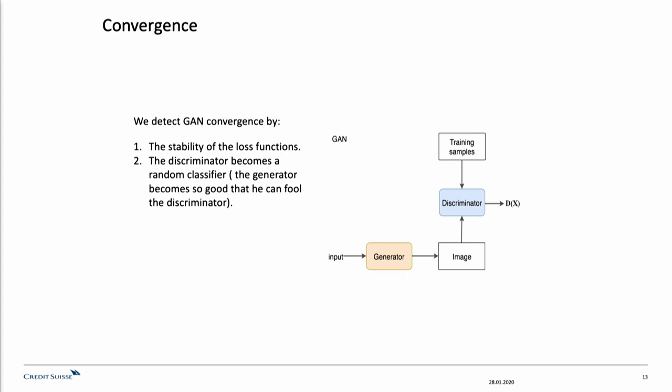In game theory, the GAN model converges when the discriminator and the generator reach something called the Nash equilibrium. Since both sides want to undermine the other, a Nash equilibrium happens when one player will not change its action, regardless of what the opponent may do.